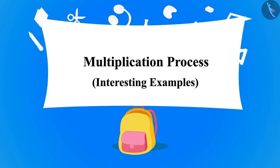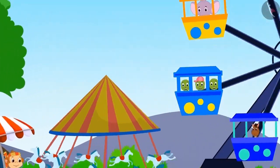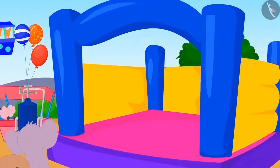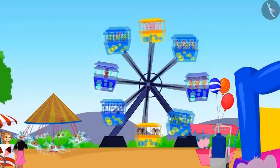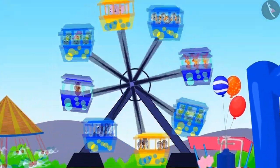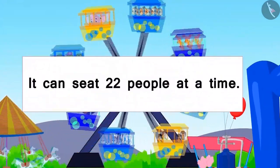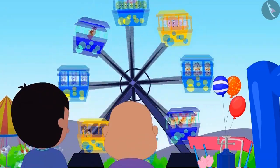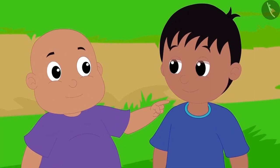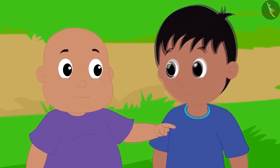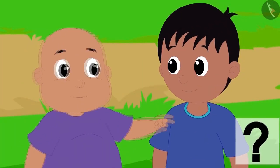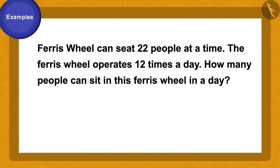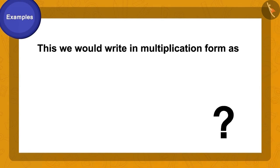In the last lesson, we learned the process of multiplication. In this lesson, we will see some interesting examples. Everyone has gone to the fair. The fair has a variety of entertainment. There is a huge ferris wheel in the fair. This ferris wheel can seat 22 people at a time. The ferris wheel operates 12 times a day. Raju asks Bablu: how many people can sit in this ferris wheel in a day? Children, can you find the answer? How do we write this in the form of multiplication? 12 times 22.